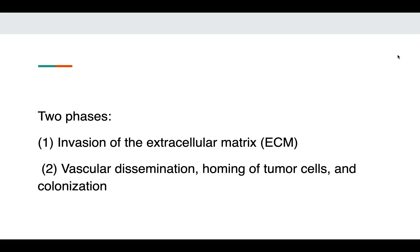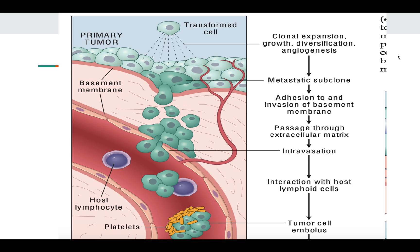There are two main phases in which metastasis takes place. First is the invasion of extracellular matrix. Then is the vascular dissemination, homing of the tumor cell, and their colonization. So we will understand what is there in the molecular basis of metastasis.